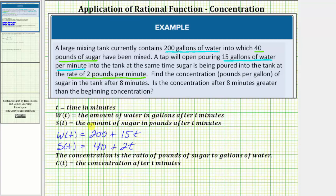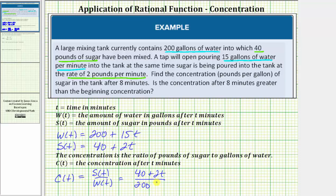Now that we've defined two functions for the amount of water and the amount of sugar, we can write a function for the concentration. The concentration is the ratio of pounds of sugar to gallons of water. So if we let c(t) equal the concentration after t minutes, c(t) equals the ratio of s(t) to w(t), which means c(t) equals the quantity (40 + 2t) divided by the quantity (200 + 15t).